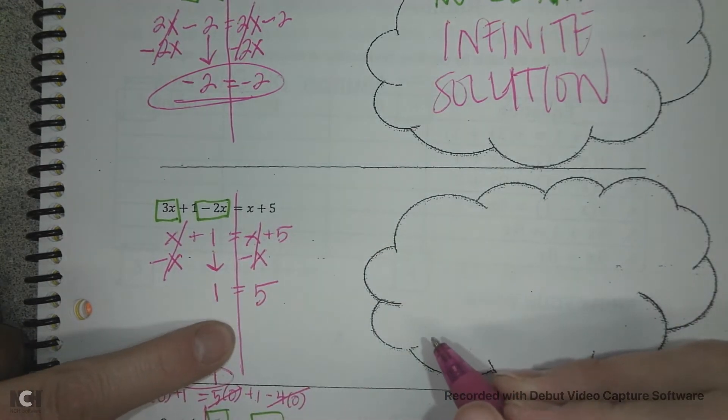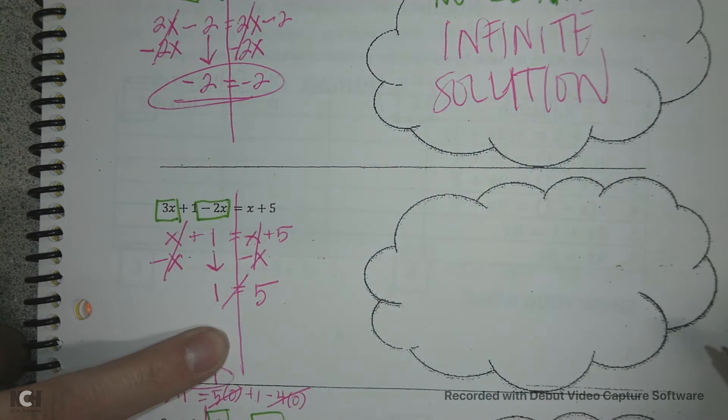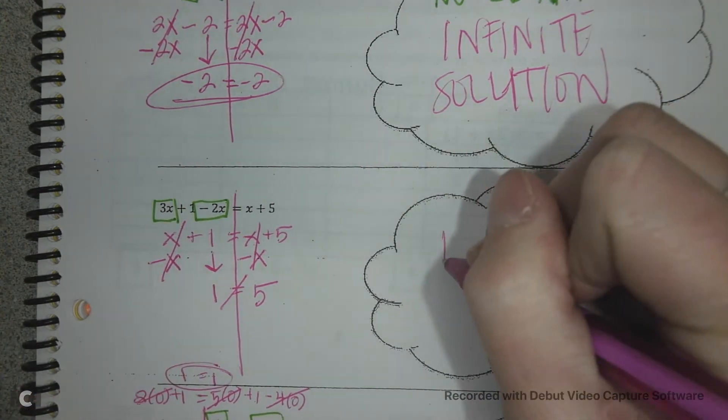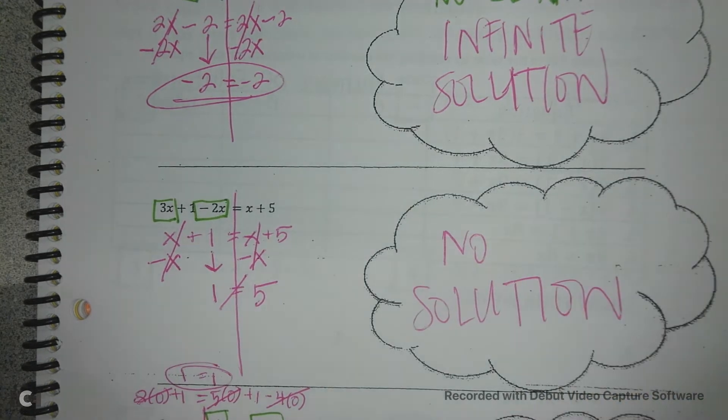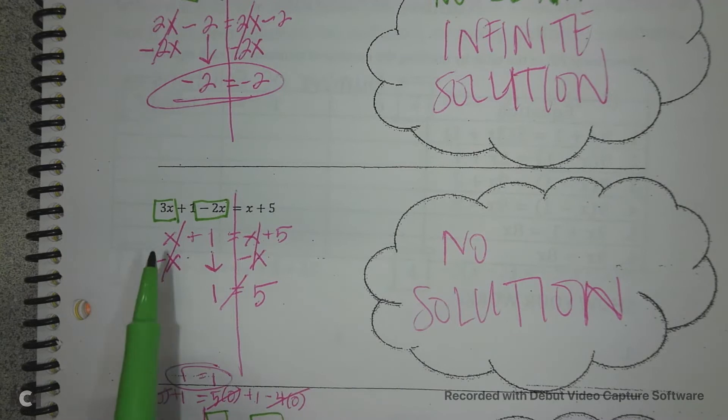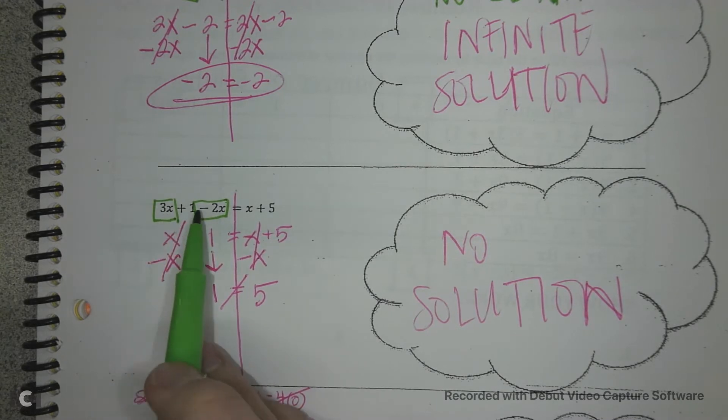Well, 1 does not equal 5. Not equal 5. So this is called a no solution. And this type of problem, it doesn't matter what number you pick for the variable.